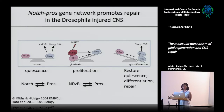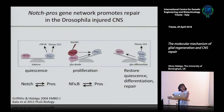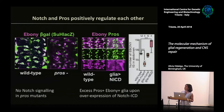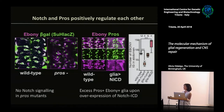This is a homeostatic mechanism that allows one round of cell proliferation but not continuous cell proliferation, and quiescence and repair are restored. We show that in Prospero mutants, Notch signaling goes down, and when you activate Notch, Prospero goes up. This means that Prospero and Notch activate each other.